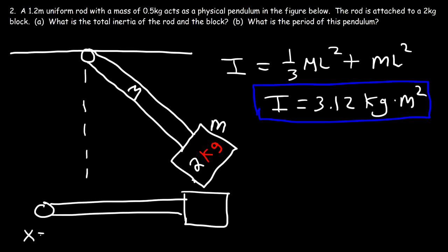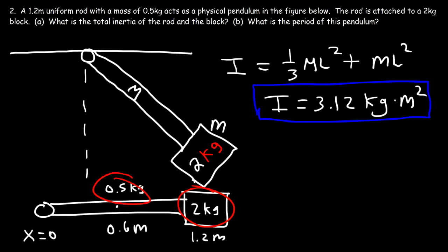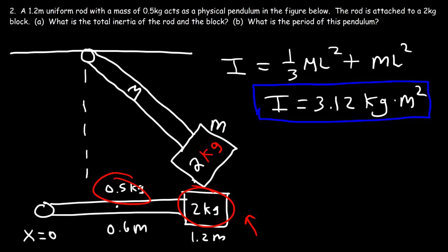Let's draw the horizontal version of this picture. We'll say this is position 0. The 2 kilogram block is 1.2 meters away from the axis of rotation. The center of mass of just the rod, which is 0.5 kilograms, is right in the middle at 0.6 meters. We need to find the center of mass for the rod and the block combined, which will be somewhere between 0.6 and 1.2. Since the block has more mass than the rod, we expect the center of mass to be closer to 1.2, so between 0.9 and 1.2.